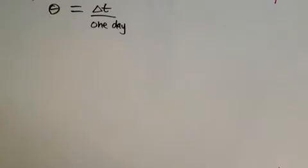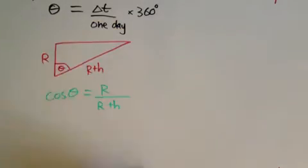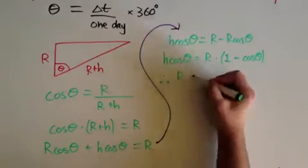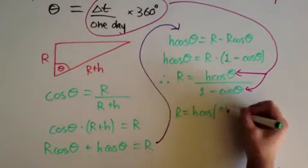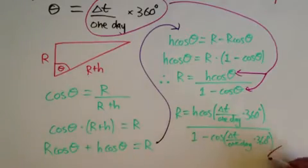With the height of the building and now the calculated value for theta, we can use one of the trigonometric functions to find an equation for this triangle and solve for the Earth's radius. Once we have our expression, we can substitute in for theta and finally calculate our result for the Earth's radius using our values for h and delta t.